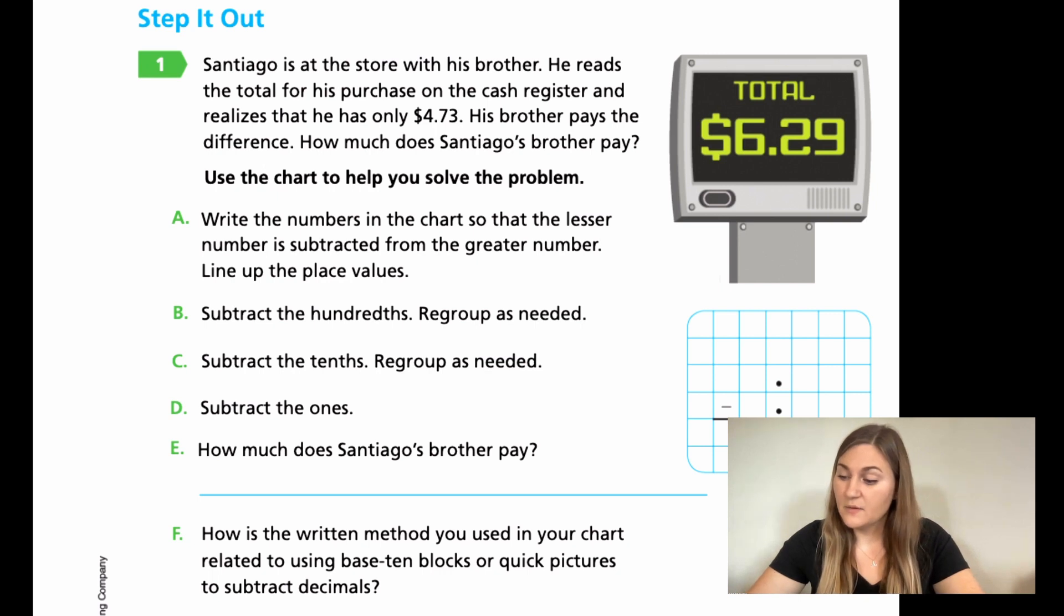It says, Santiago is at the store with his brother. He reads the total for his purchase on the cash register and realizes that he only has $4.73. His brother pays the difference. How much does Santiago's brother pay? So his total said $6.29 and he was like, oh no, I only have $4.73. So his brother pays what was left.